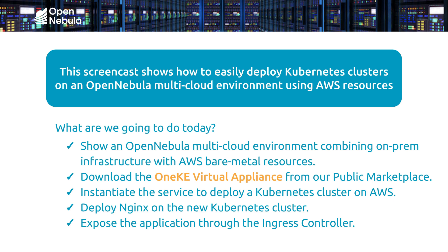First, we are going to download the virtual appliance — the OneKE (one Kubernetes engine) — that is available from our public marketplace. Once we download it, we can instantiate and deploy Kubernetes clusters on AWS. Once the Kubernetes cluster is up and running, we are going to deploy an Nginx application based on a Docker image and expose the application to the ingress controller provided by the virtual appliance.